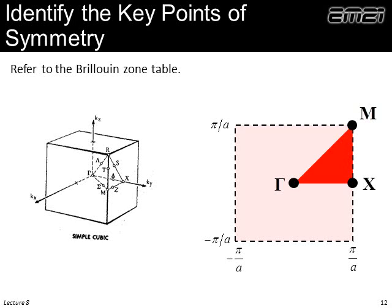Now we want to identify the key points of symmetry. There is a convention for naming these key points, and I've given you a handout that has the convention. For this case, we would look at the cubic unit cell — the simple cubic — and look at how things are labeled. Looking at the in-plane triangle, we see that the key points of symmetry are labeled gamma, X, and M along the diagonal. So we stick with that convention: gamma, X, and M. I'll also make that handout available on the web page.